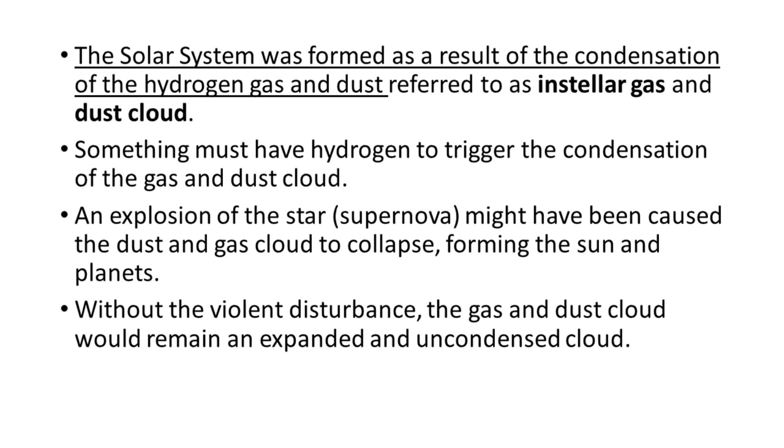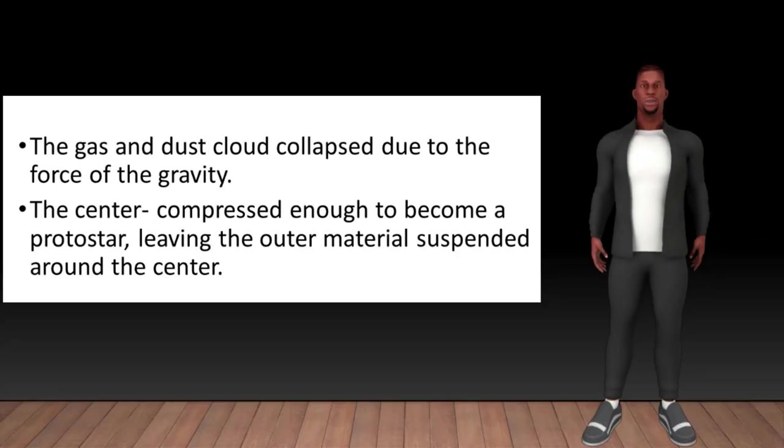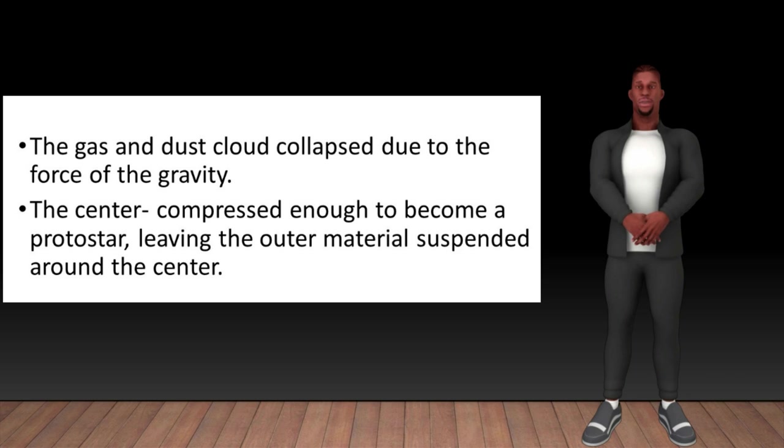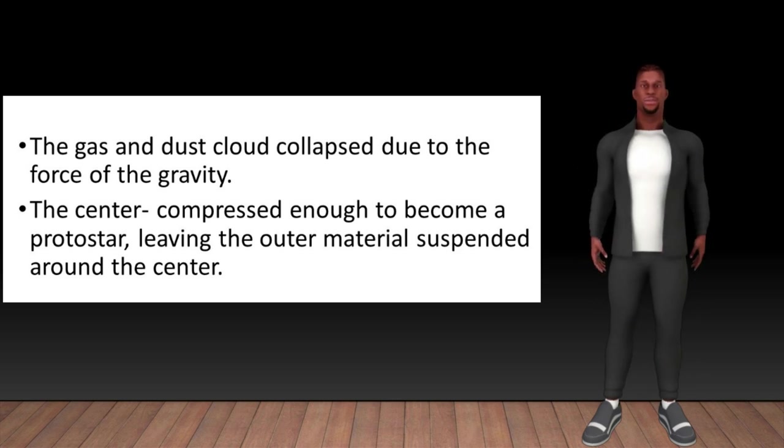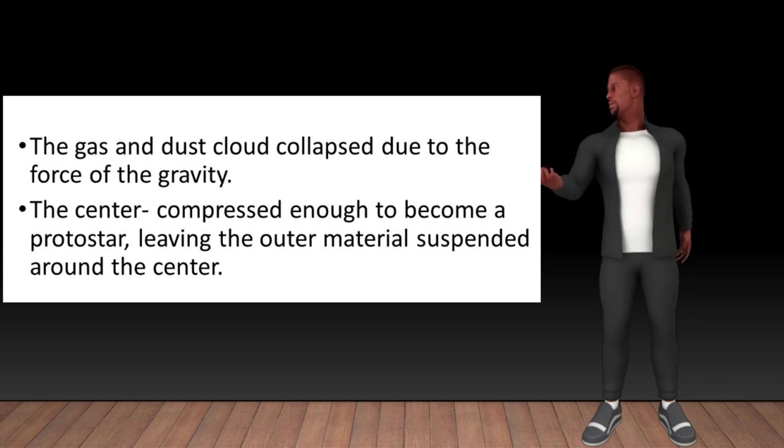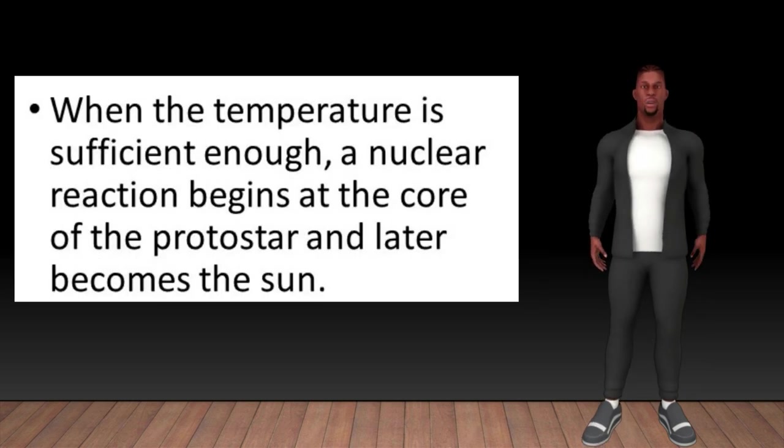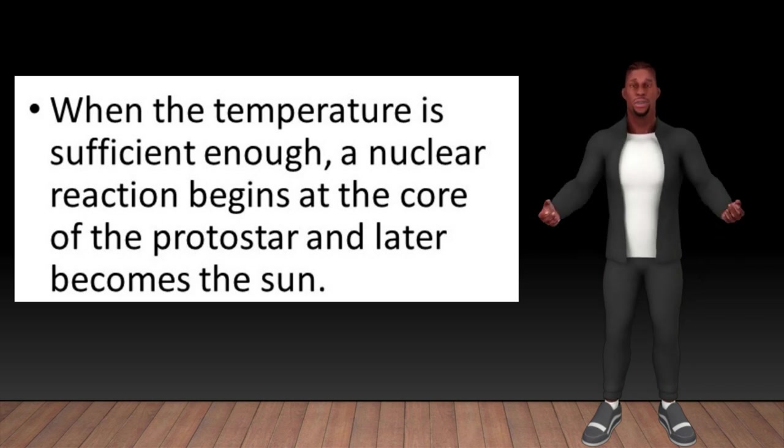According to this theory, the solar system was formed as a result of the condensation of the hydrogen gas and dust, referred to as interstellar gas and dust cloud. Something must have triggered the condensation of the gas and dust cloud. An explosion of a star, a supernova, might have caused the dust and gas cloud to collapse, forming the sun and planets. Without the violent disturbance, the gas and dust cloud would remain expanded and uncondensed. The gas and dust cloud collapsed due to the force of gravity. The center compressed enough to become a protostar, leaving the outer material suspended around the center. As the cloud continues to shrink, its rotational speed increases and becomes a rapidly rotating disk. The contraction converts gravitational energy into heat energy and causes the center to glow.